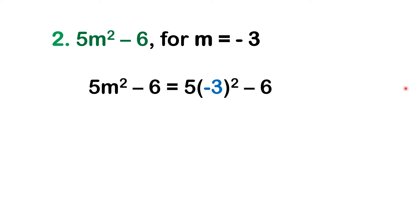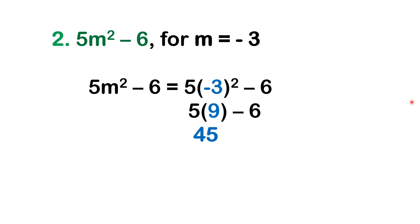Copy negative 6. Solve it one by one. Let us start with the number inside the parenthesis that is raised to 2. We have negative 3 raised to 2, which means we multiply negative 3 to itself: negative 3 times negative 3. Since both are negative, the answer will be positive. 3 times 3 gives us positive 9, so negative 3 squared equals positive 9. Then 5 times 9 gives us 45. 45 minus 6 gives us 39. Therefore, the value of 5m squared minus 6 if m is negative 3 is 39.